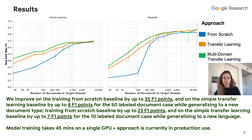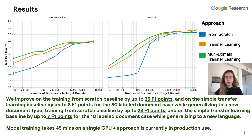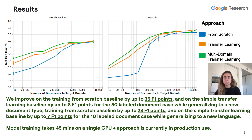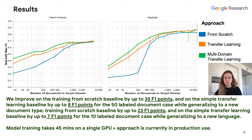Similarly, we improve on the training-from-scratch baseline by up to 23 F1 points, and on the simple transfer learning baseline by up to 7 F1 points for the 10 labeled document case while generalizing to a new language. Source model training takes approximately 45 minutes converging after 15 to 25 epochs, and fine-tuning on the target domain takes approximately a couple of minutes converging after 1 to 2 epochs on a single GPU — in contrast to pretraining-based approaches such as BERT Grid, which takes approximately 1,090 minutes converging after 20 epochs.